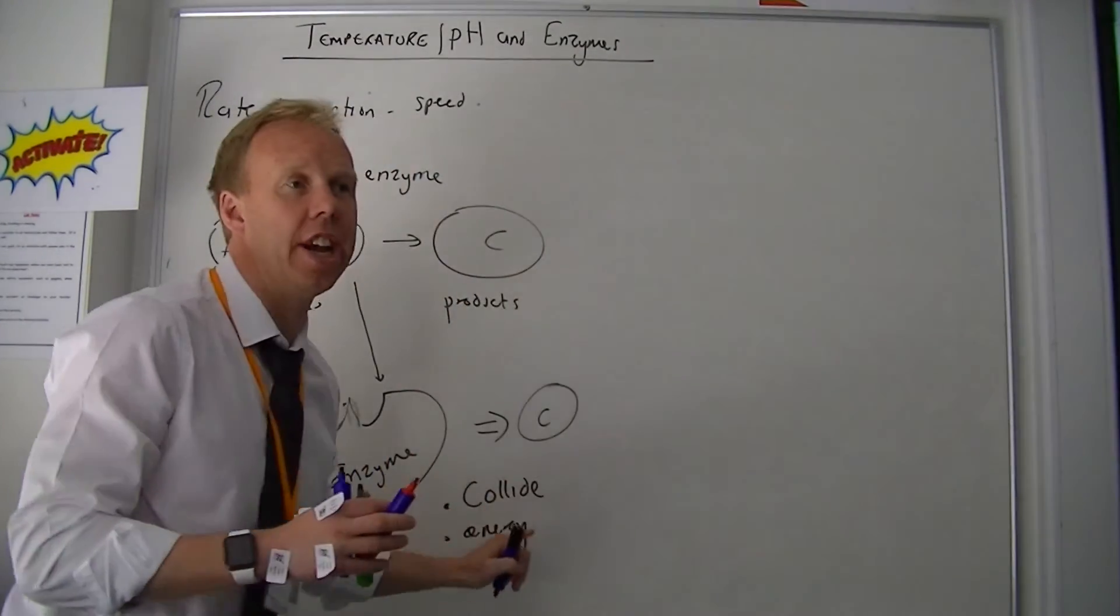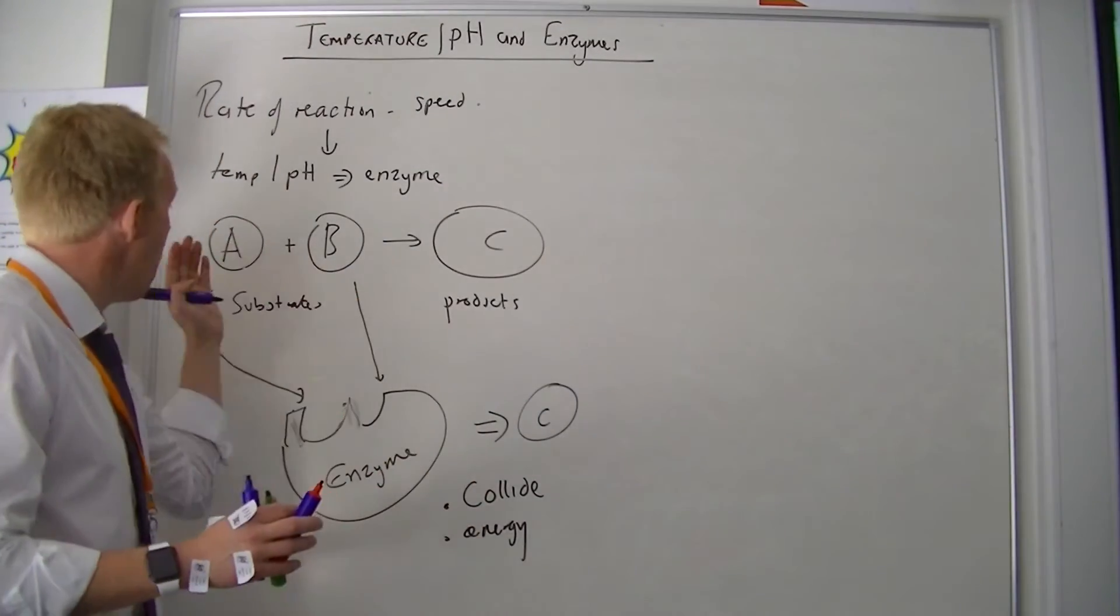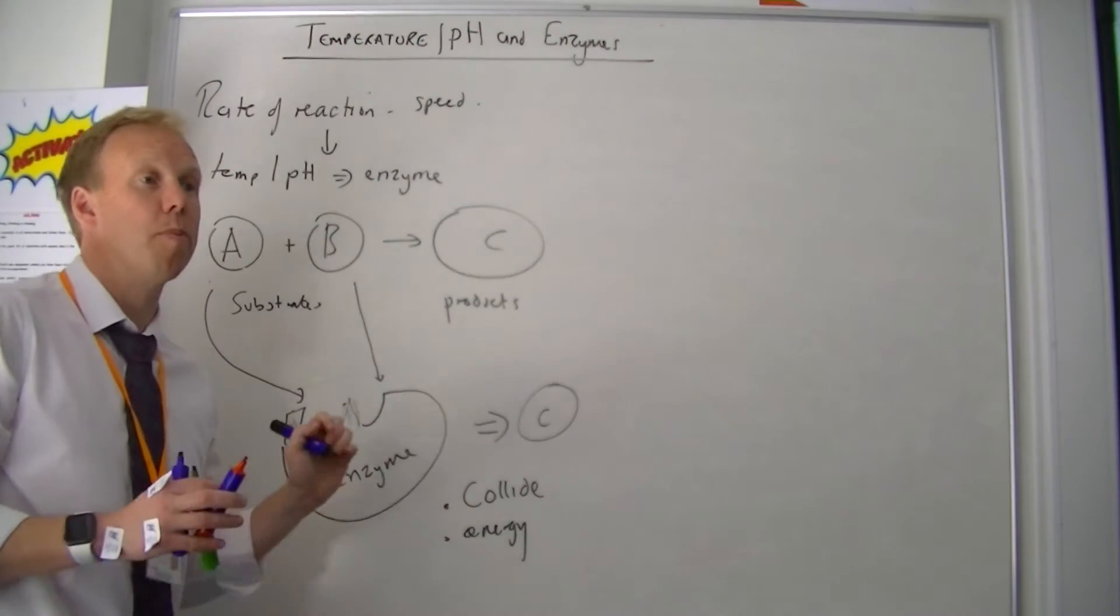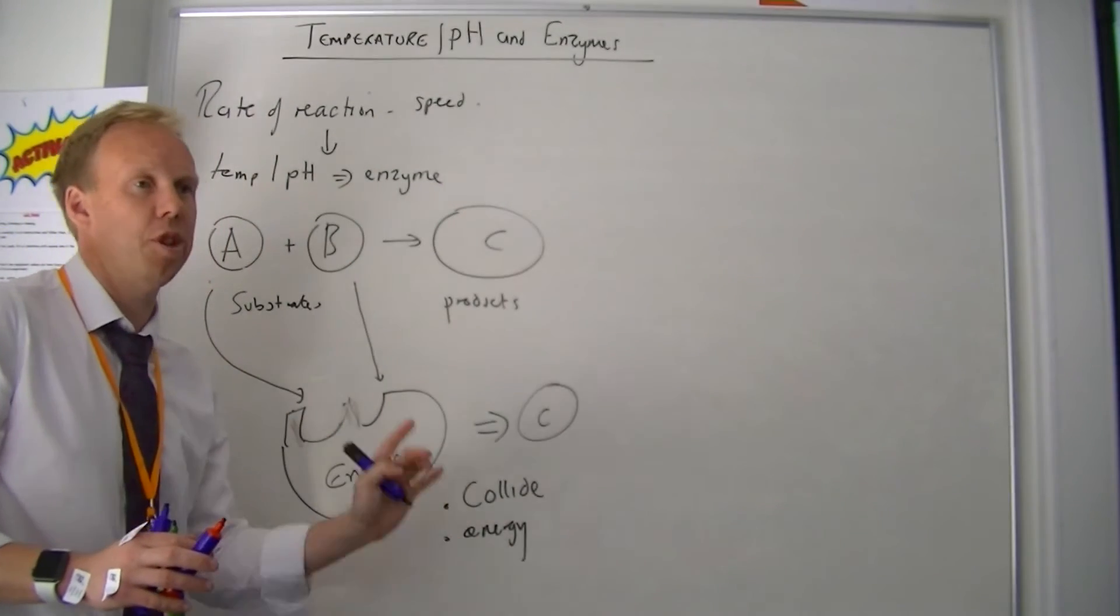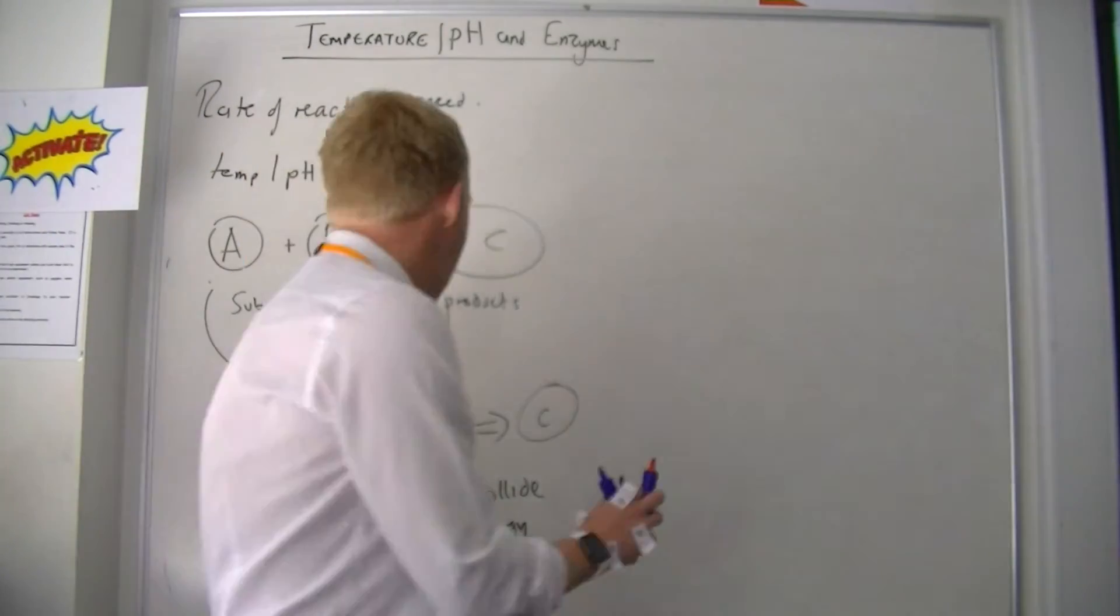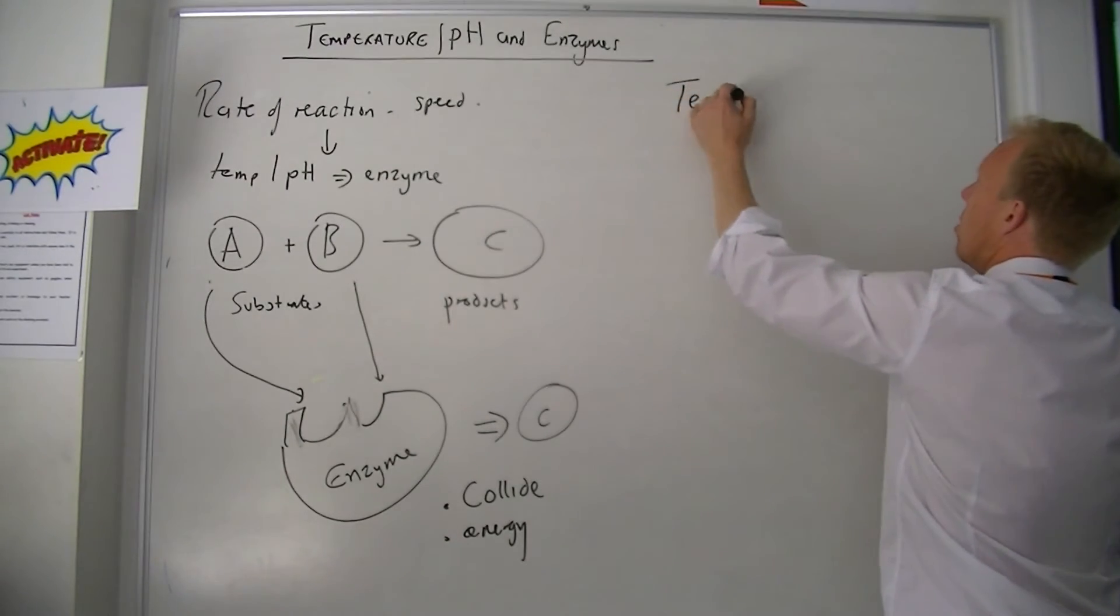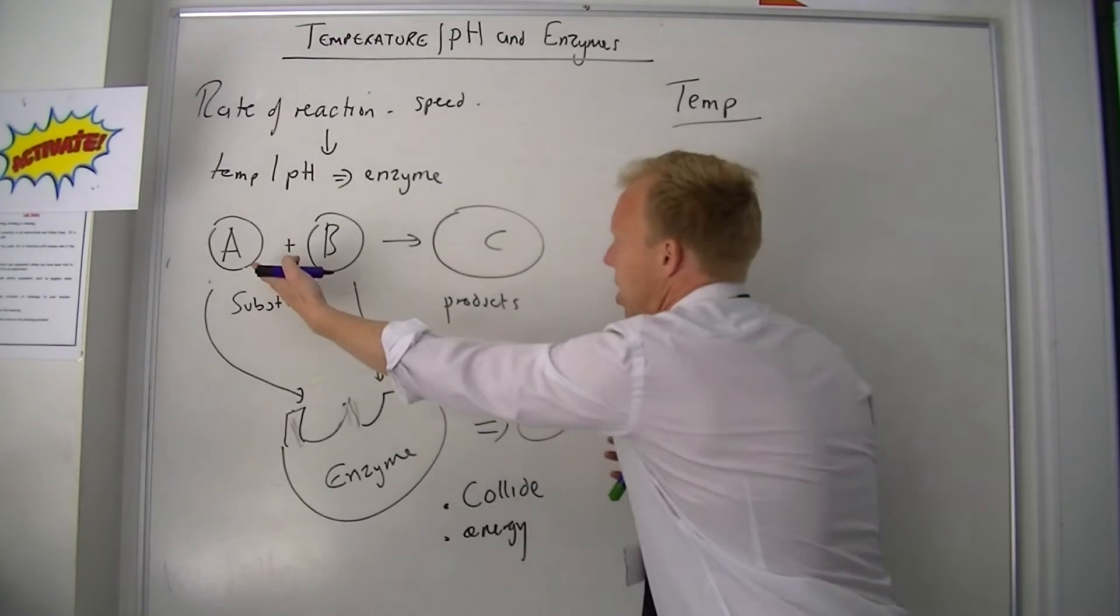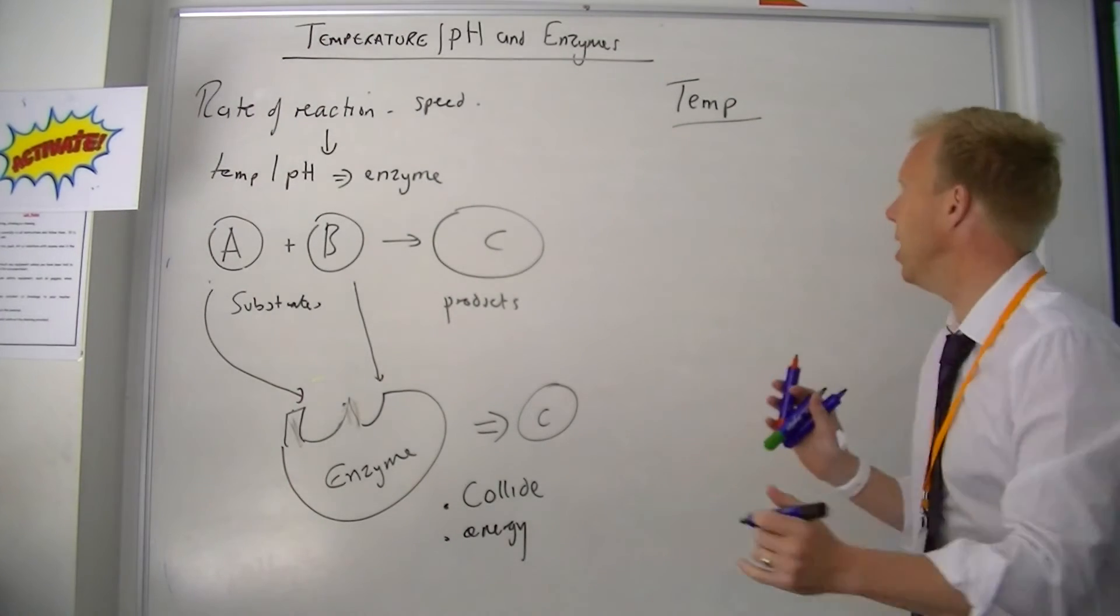And when you get those two ingredients, A and B will become C. So I'll say that again: when A and B collide with enough energy they make C, the products. Now there's two very important graphs you have to know about and you have to be able to explain. How does temperature affect this concept here? How fast we turn A and B into C? Because that's what rate of reaction is.